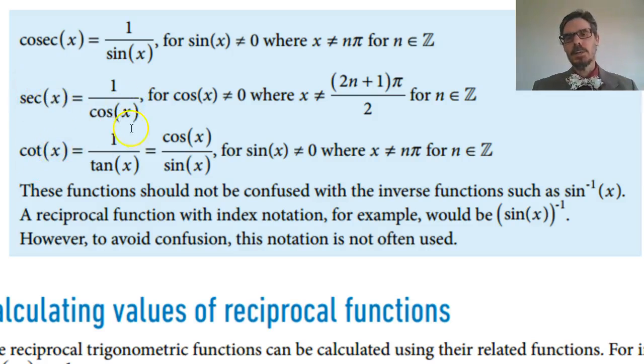Cot is 1 over tan. So obviously cot is not defined when tan is 0. But tan is sine over cos, so 1 over tan is cos over sine. And therefore cot is not defined when sin is 0. So that's the same as up here. It's every multiple of π.